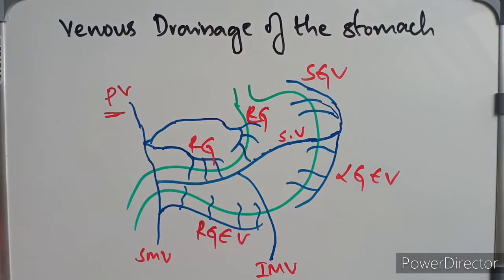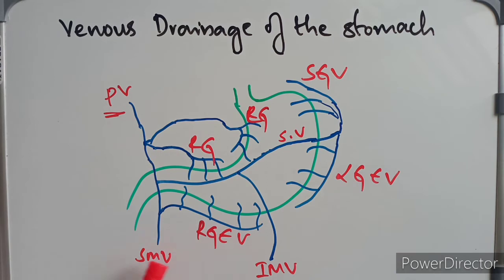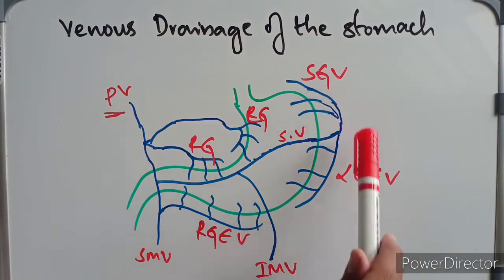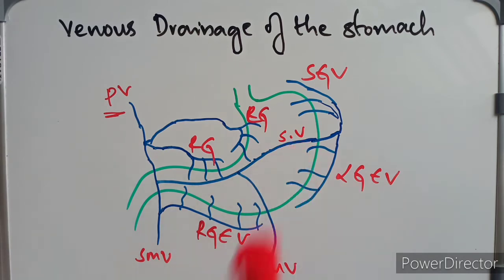This is the venous drainage of the stomach. If you know the arterial supply, the venous drainage becomes very simple. The left gastric vein and right gastric vein drain into the portal vein. The right gastroepiploic vein drains into the superior mesenteric vein. The short gastric veins and left gastroepiploic vein drain into the splenic vein.